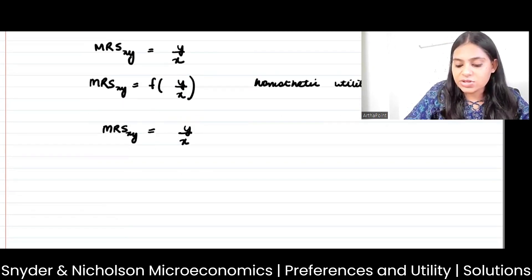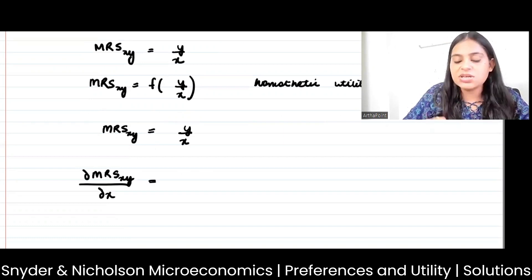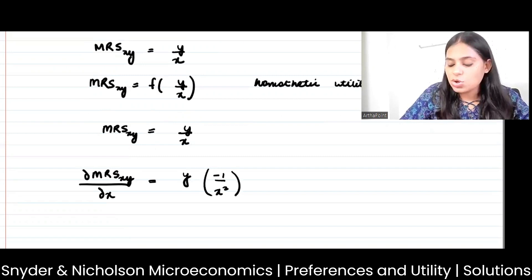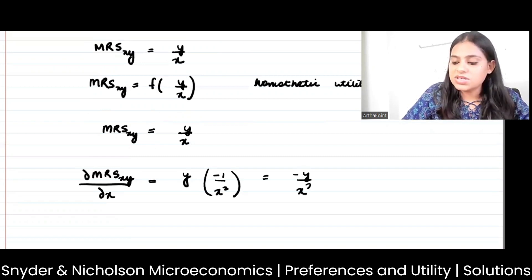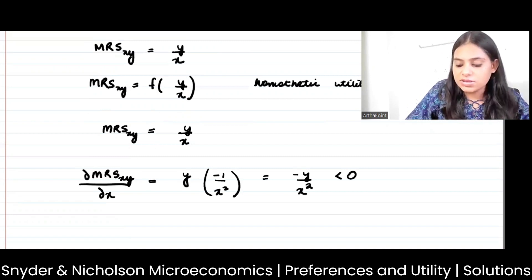But you can go one step ahead and differentiate. So if I differentiate MRS with respect to x, I will hold y constant. Differentiation of 1 by x will be minus 1 by x square, so you will get minus y by x square. This is clearly negative, therefore MRS is diminishing.